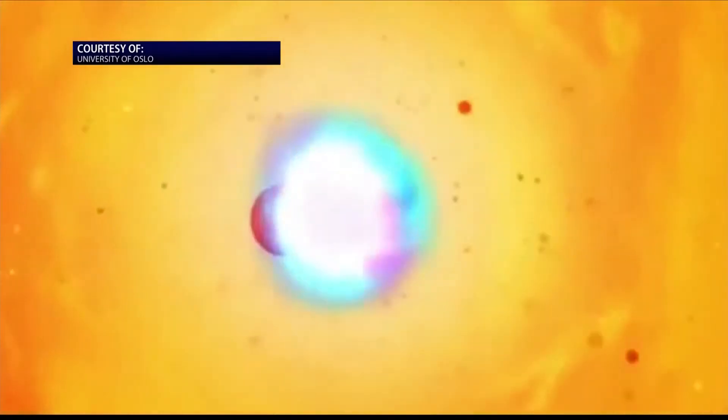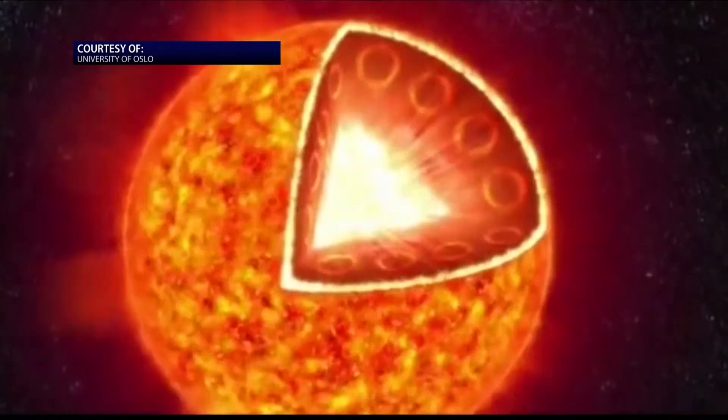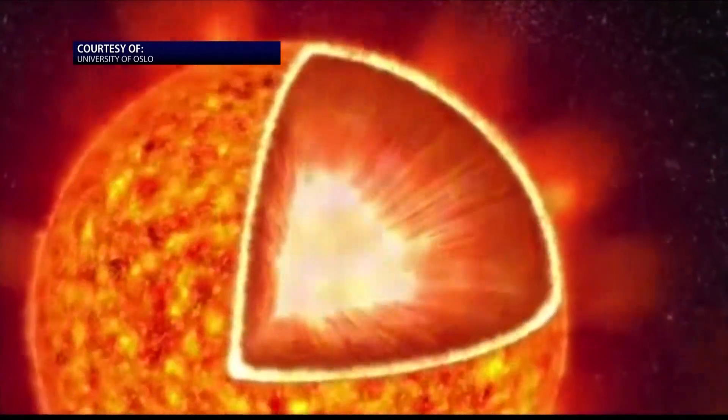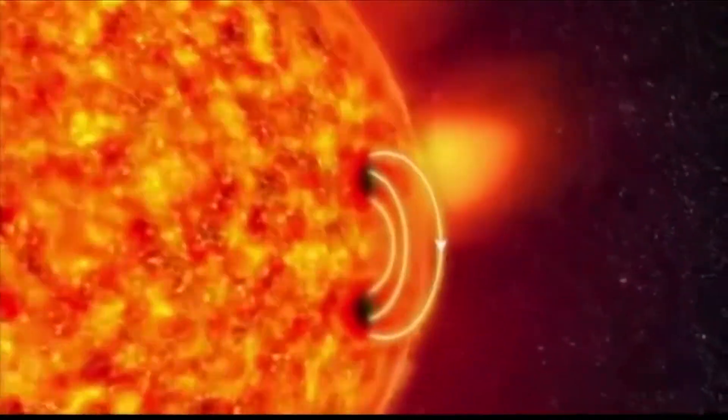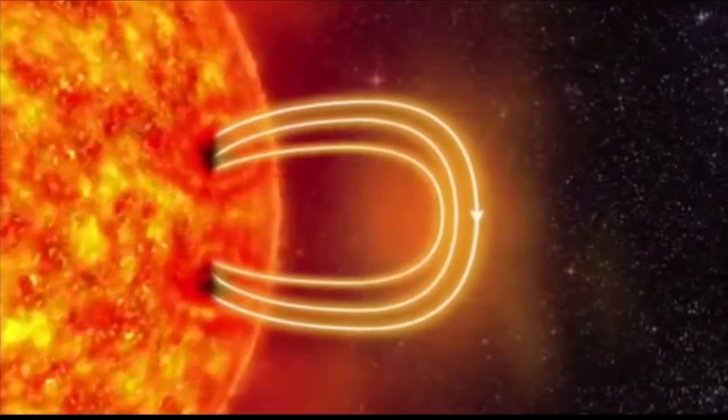The process starts deep inside the sun, where nuclear reactions release energy outward, creating rounded magnetic fields. Sometimes a magnetic field will push its way to the surface and then electrically charged gases or plasmas will push the magnetic field farther out.